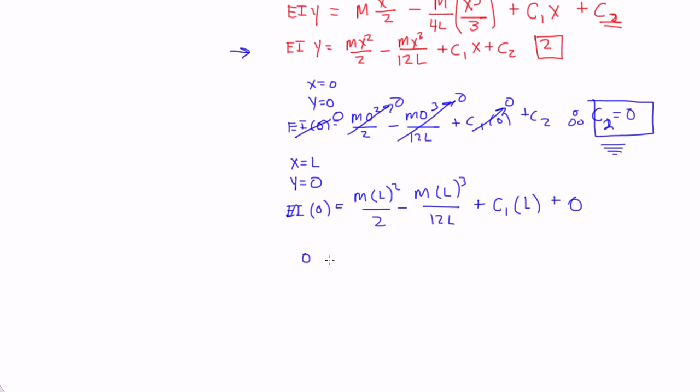And on the left side we get 0, on this side we get mL squared over 2 minus mL squared over 12, because this L, and then I can cancel out one L there, then you have plus C1 times L, all of this is equal to 0.